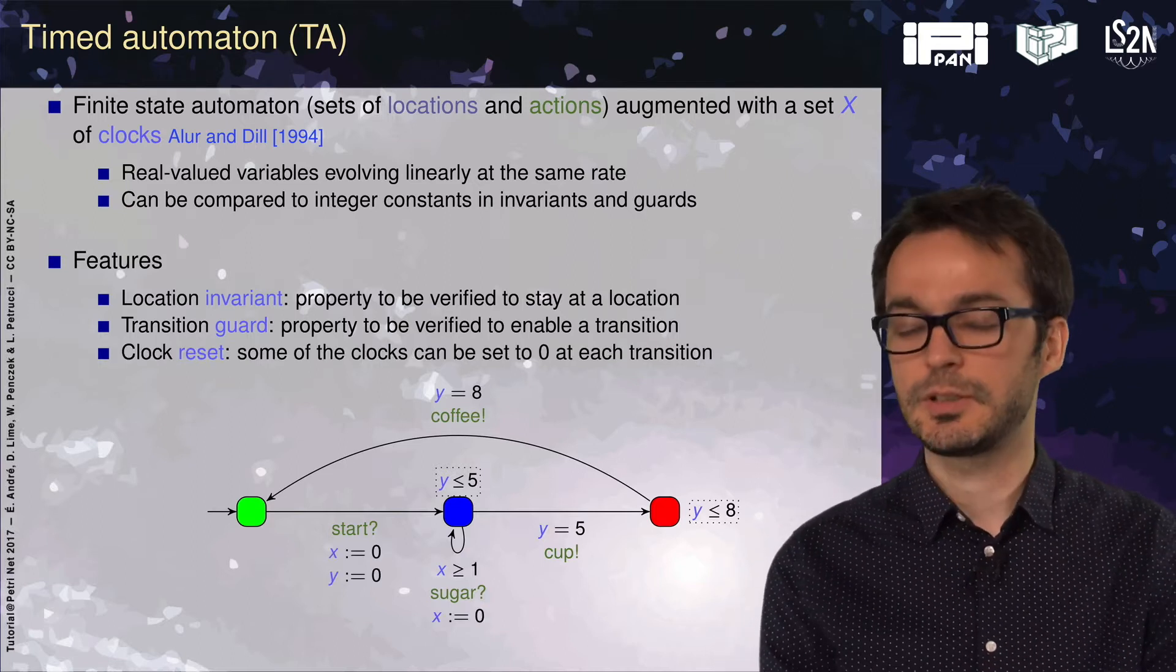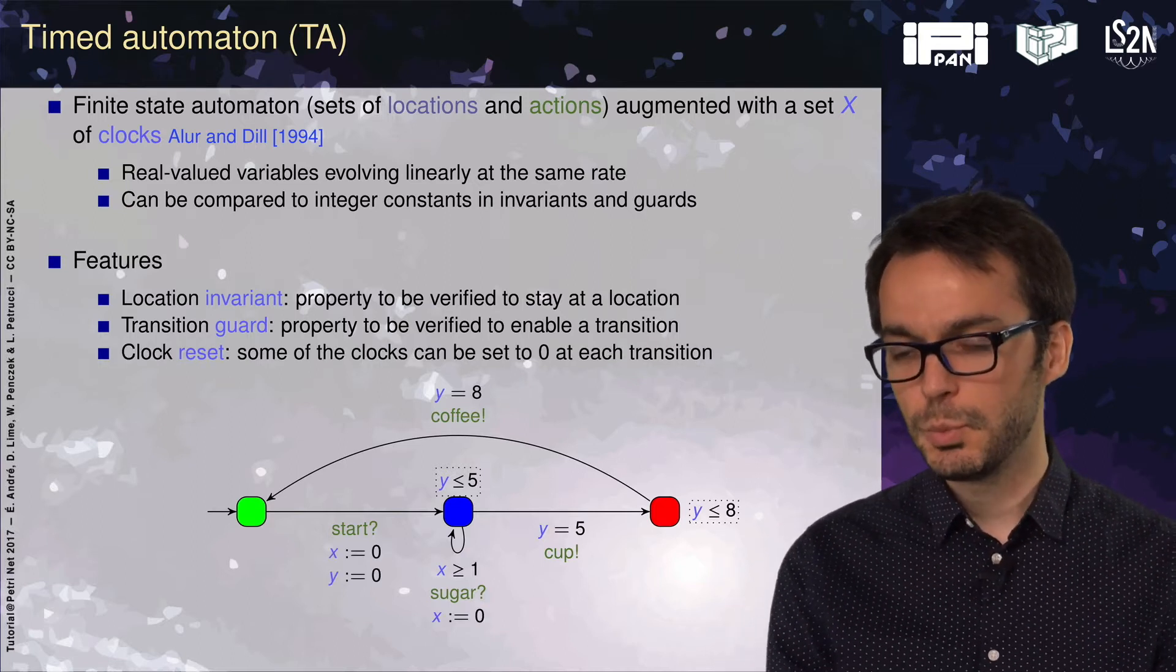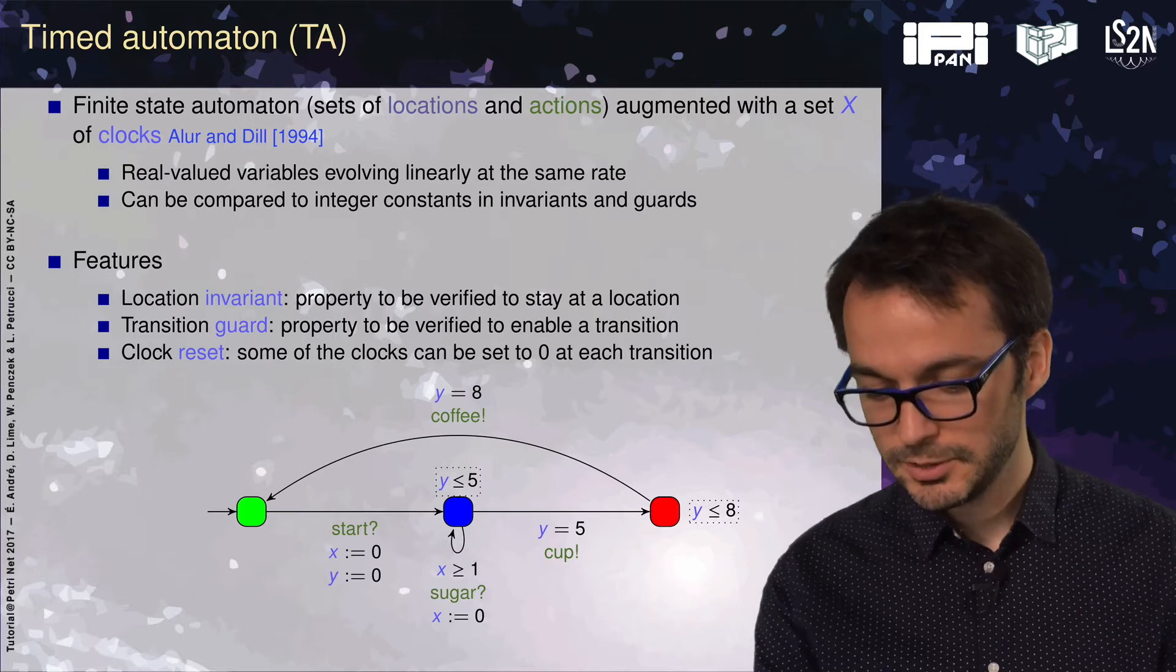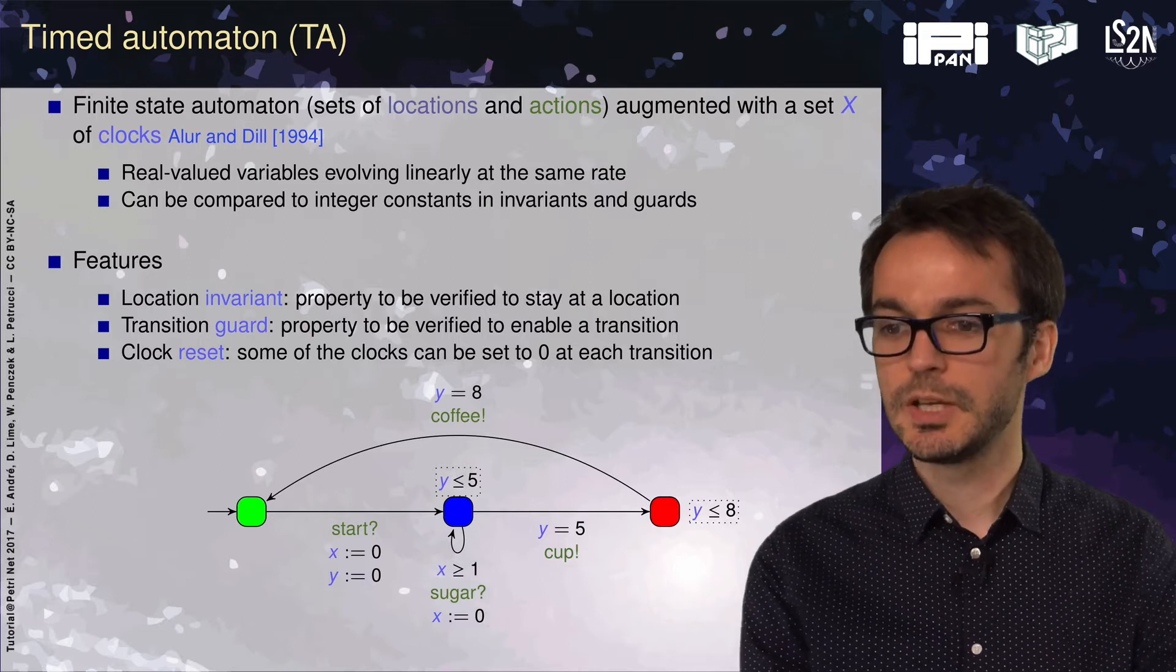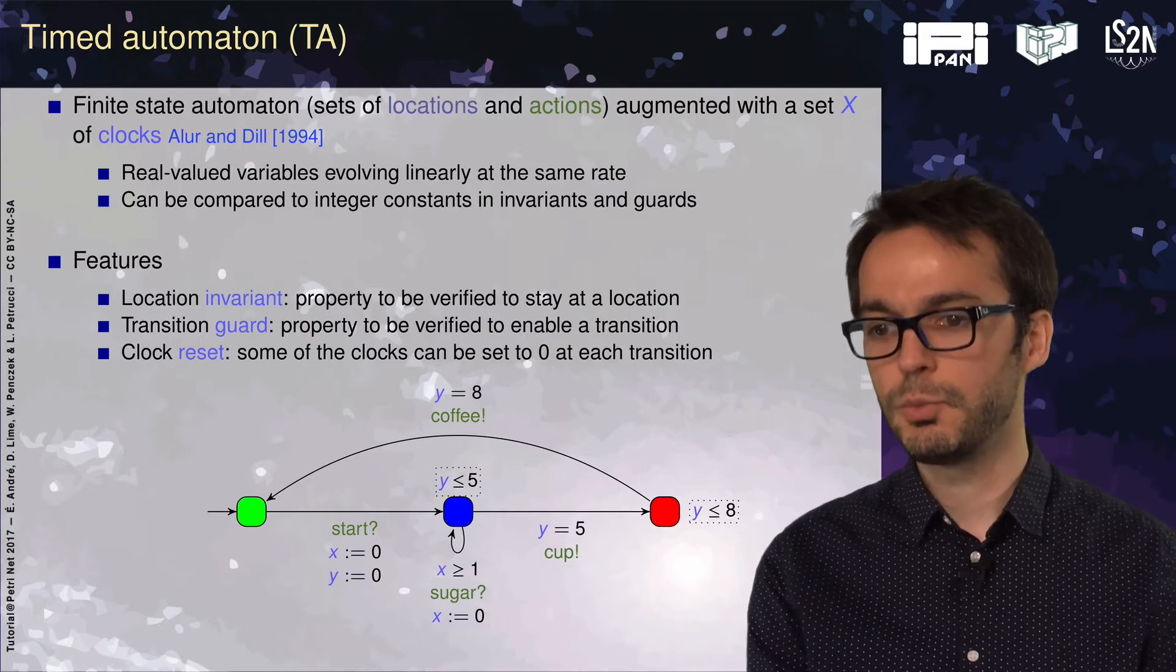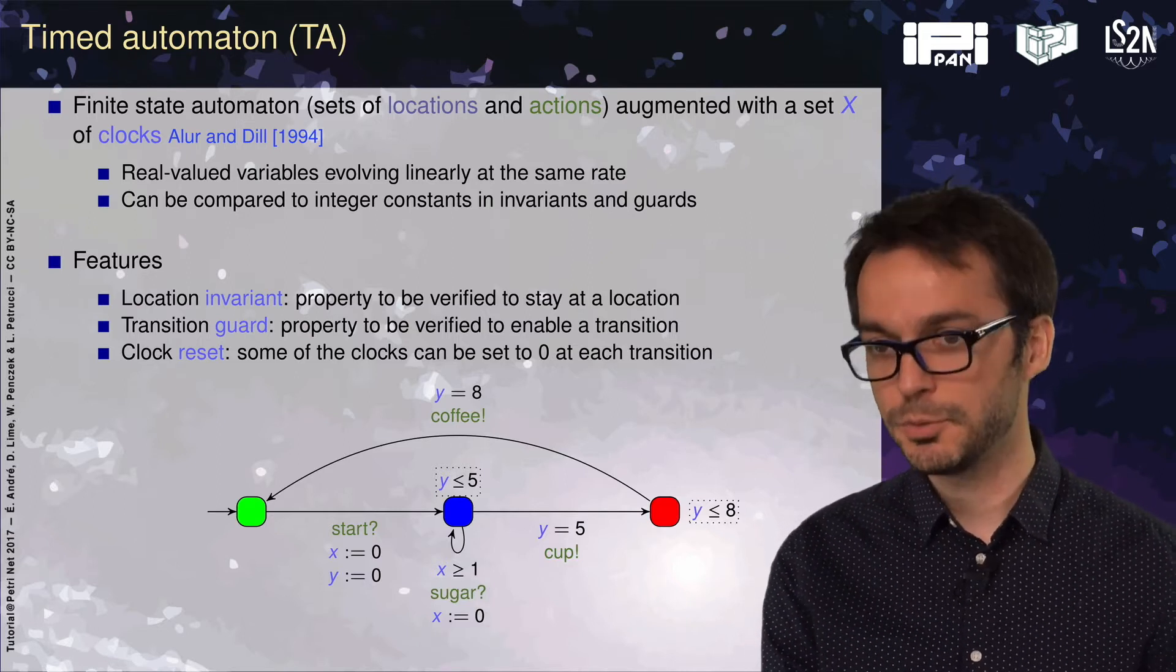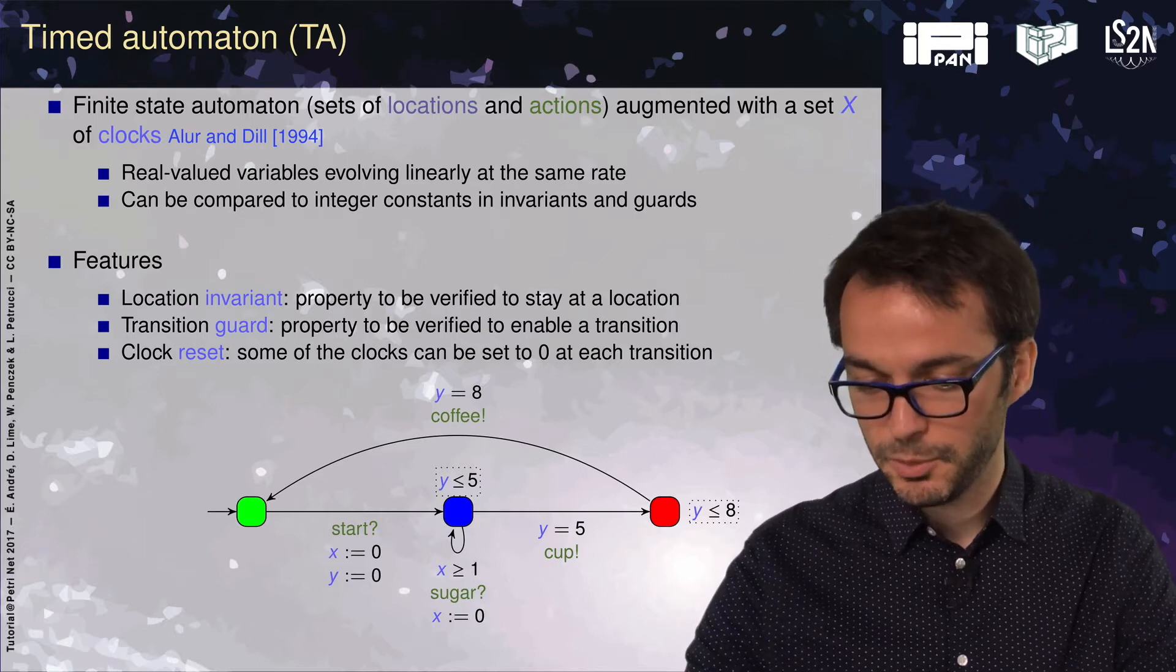And finally, the main interest is that we can reset some of the clocks. Here both clocks are reset together, but on this transition only clock x is reset. From the blue location onwards, both clocks have different values. This is where timed automata are powerful.